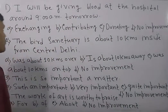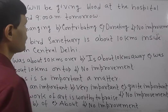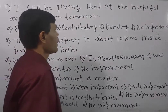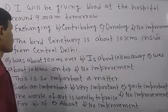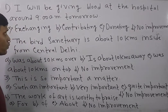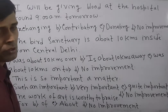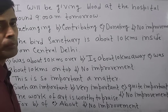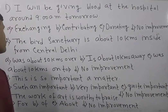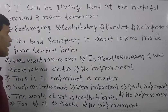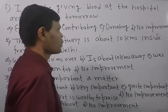Look at the first question: 'I will be giving blood at the hospital around 9am tomorrow.' The sentence is basically based on the future continuous or progressive tense. Now look at the options: exchanging, contributing, donating, no improvement.